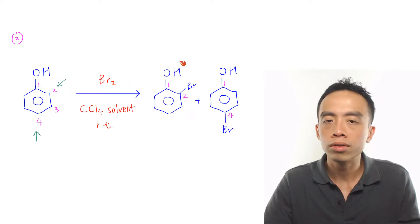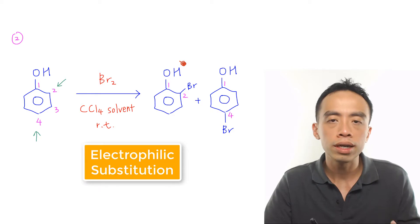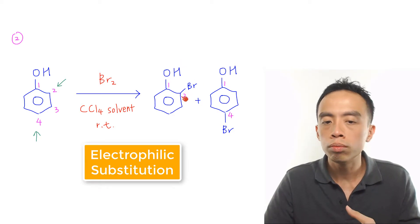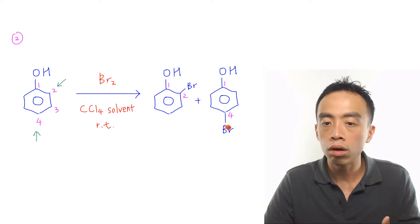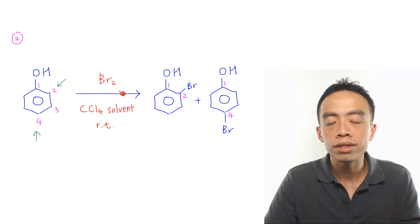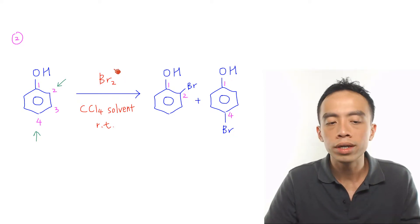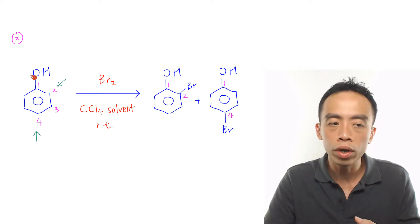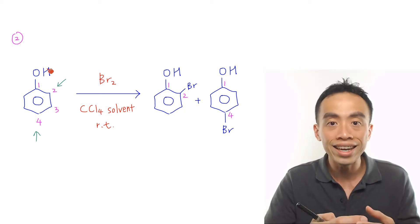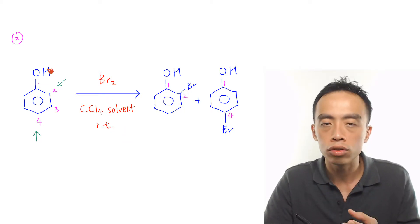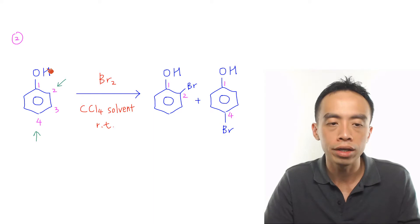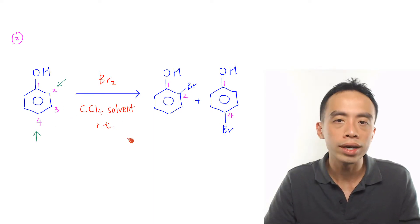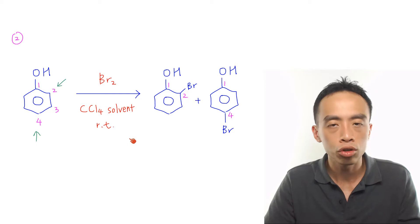The second major reaction of phenol is the electrophilic substitution of phenol to form 2-bromophenol or 4-bromophenol. This is done using bromine in CCl4 solvent at room temperature. Take note: the OH group is a highly activating, 2,4-directing group, so electrophilic substitution involving phenol does not require an FeBr3 catalyst.